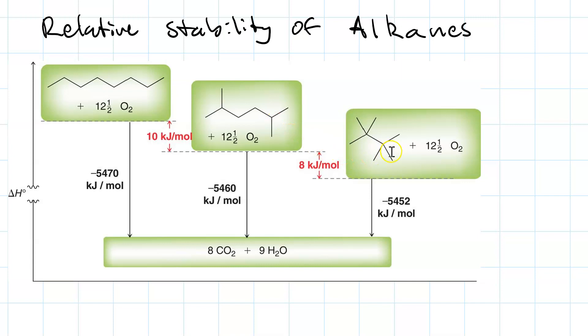And if we branch it further, we lose 8 kilojoules per mole. So the least branched is the least stable. The most branched is the most stable.